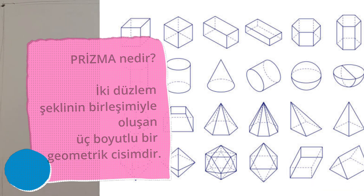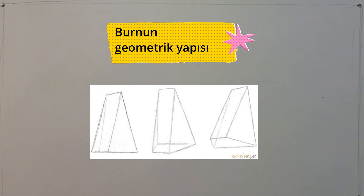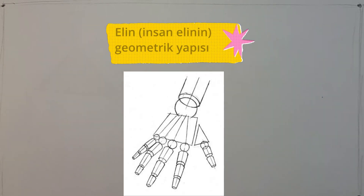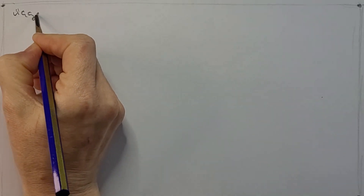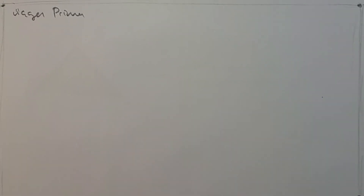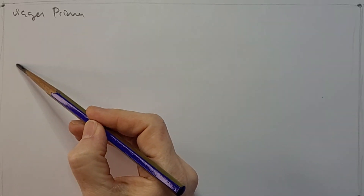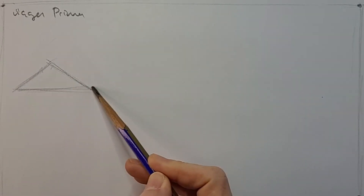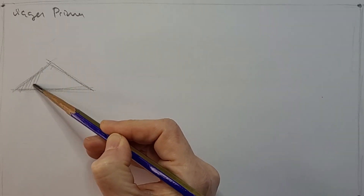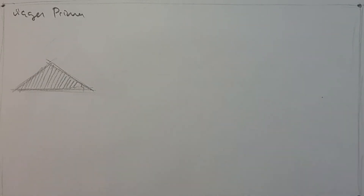Şimdi prizmalara bir giriş yapalım artık. Çünkü prizmalar gerçekten bizim çizim yaparken ana unsurlarımızdan bir tanesi olacak. Bir burun çizerken, ağzı çizerken, elleri çizerken aslında tamamen geometrik düşünmeye başlayacağımız için prizmaların yapısı bizim için çok önemli. Şimdi prizmalara da bir geçelim, üçgen prizma ile başlayalım. Önce üçgen prizmanın yüzeyini önden gördüğüm şekliyle çizmeye çalışacağım. Alt tabanının üçgen olduğundan emin olalım.